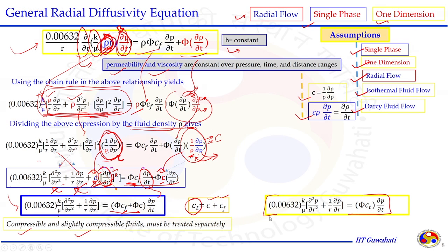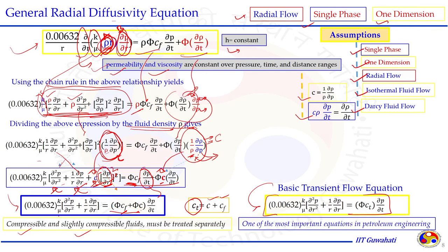This equation can be solved for different types of fluid. Compressible and slightly compressible fluids must be treated separately. When combining both fluid and rock compressibility into C_t, the expression simplifies to the generalized radial diffusivity equation, where we have further assumed permeability and viscosity are constant. This equation is also called the basic transient flow equation and can be solved for any flow regime under the stated assumptions — it is one of the most important equations in petroleum engineering.